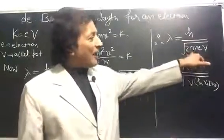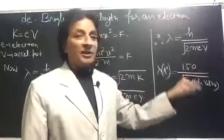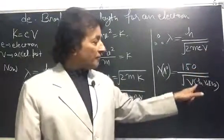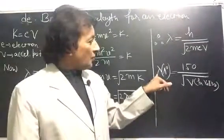If you put the value of mass of an electron, if you put the value of charge on electron, it becomes 150/√V in volts. This is a shortcut you can learn. So λ will be in angstroms.